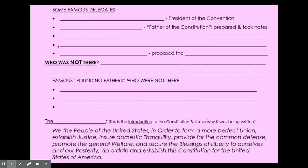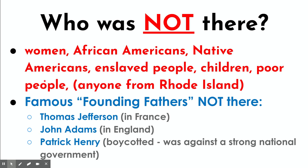Who was not there? These are some general categories. There were no women — it was all men, all white men, all white men who owned property, all wealthy white men who were highly educated. Kind of an elite group compared to the whole population. Women were not there, no African Americans, no Native Americans, no enslaved people, no children, no poor people, and nobody from Rhode Island. This was not necessarily an all-inclusive representative group.